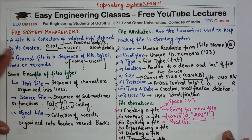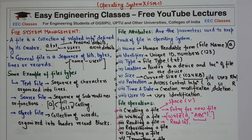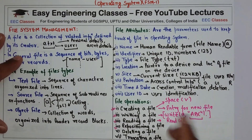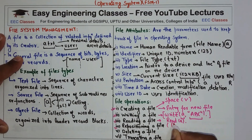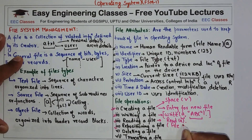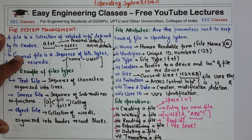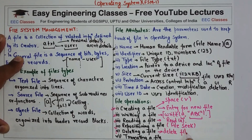Next is repositioning of the file, which does not involve any actual input/output operation. This operation is also known as file seek — basically, if you need to search within a file you use repositioning. Deleting a file means removing the file from the file system entry.